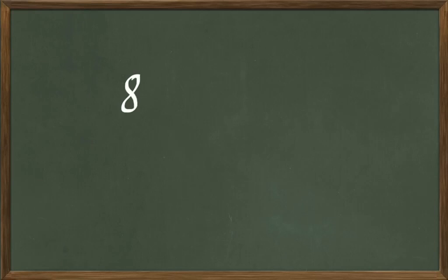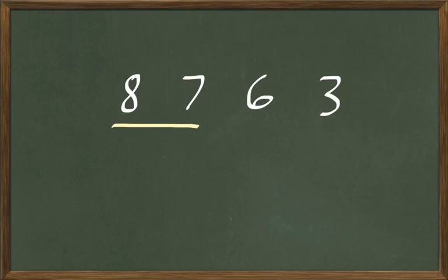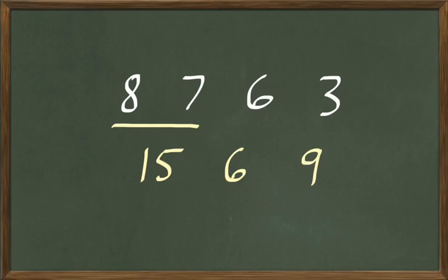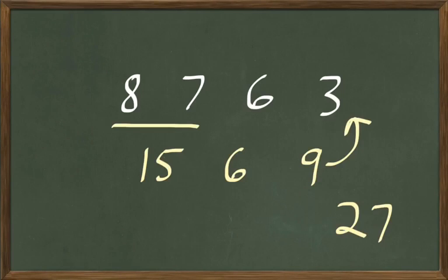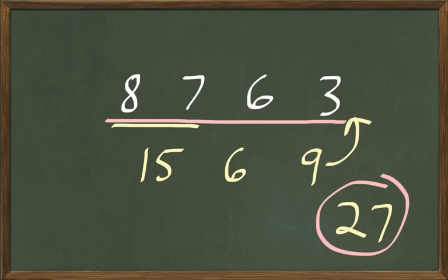Let's do 8 and 7 less 6 multiplied by 3. So 8 and 7 are 15, less 6. We subtract 6 from 15, we get 9. And 9 times 3 — or rather 3 times 9 — are 27. So 8 and 7 less 6 multiplied by 3 are 27.